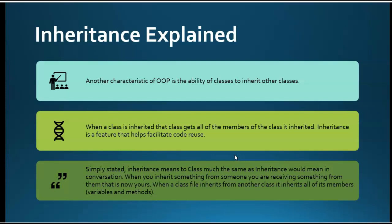Inheritance is when a class you create can inherit some of the members from another class. If I have a class called GCC student, it may inherit from student, and then student might inherit from person. Person would have name and date of birth. Student would have major and maybe GPA. And GCC student would have county residence, because at GCC you get a discount or pay one rate if you're a resident of Maricopa and a different rate if you're not.